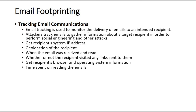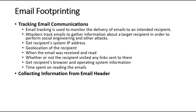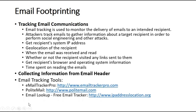Email footprinting involves tracing email communications. You can get the recipient system's IP address, know the geolocation of the recipient, and find out when the email was received and read. By checking all email headers, you can determine the sender's IP, the country it came from, time spent reading the email, and the email gateway being used — for example, Cisco's email gateway. Email tracking tools include emailtrackpro.com, politemail.com, and ipaddresslocation.org.